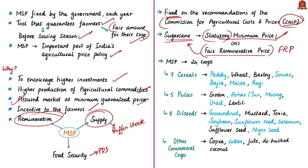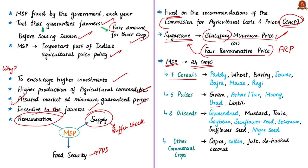MSP for different agricultural crops — food grains, oil seeds, fiber crops, sugarcane, and tobacco — is announced before their sowing seasons, giving farmers an idea of the price insurance cover provided by the government. At present, MSP covers 24 crops, including 7 cereals: paddy, wheat, barley, jowar, bajra, maize, and ragi; 5 pulses: gram, arhar, moong, urad, and lentil; 8 oil seeds: groundnut, rapeseed/mustard, toria, soybean, sunflower seed, sesame, safflower seed, and niger seed; and other commercial crops such as copra, cotton, jute, and dehusked coconut.